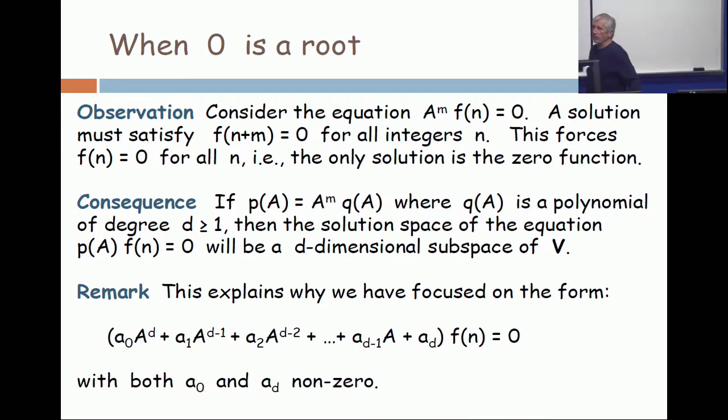In partial fractions, there's no distinction with zero being a root. When you have a term like x to the fifth, you have a term like constant over x, constant over x squared, constant over x cubed, constant over x to the fourth, just like all the other terms.